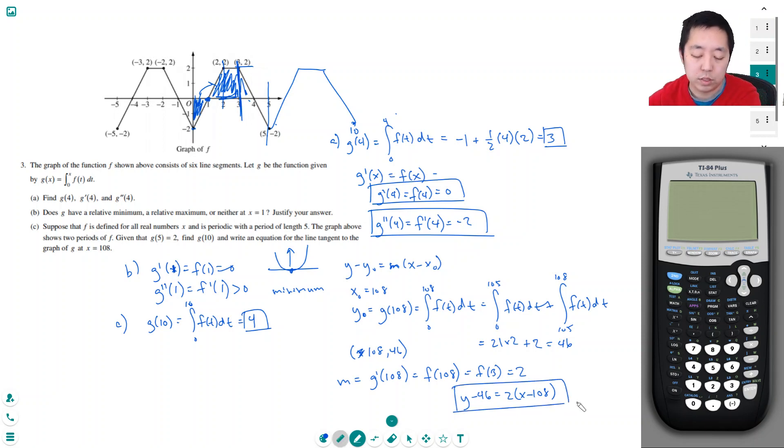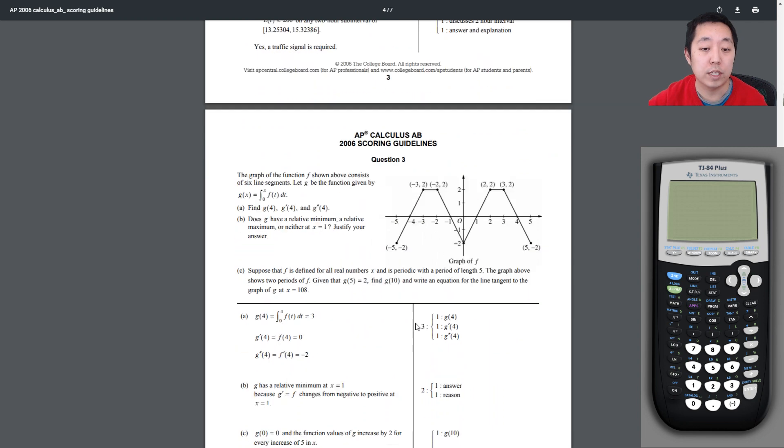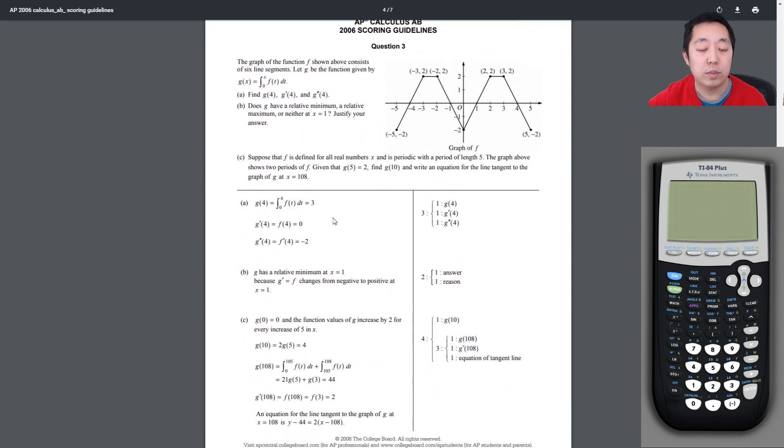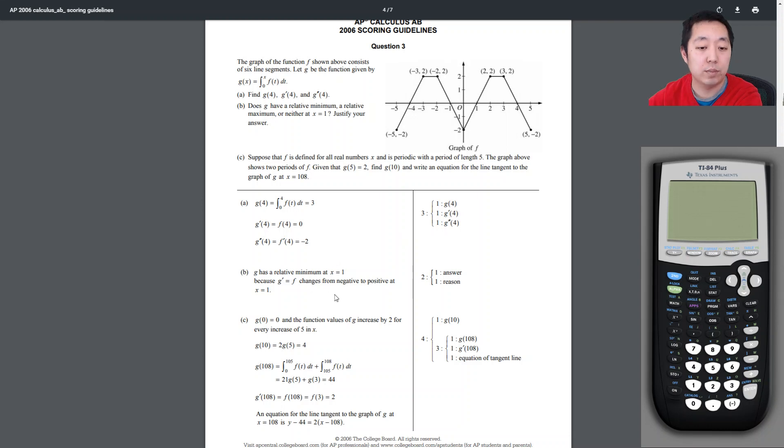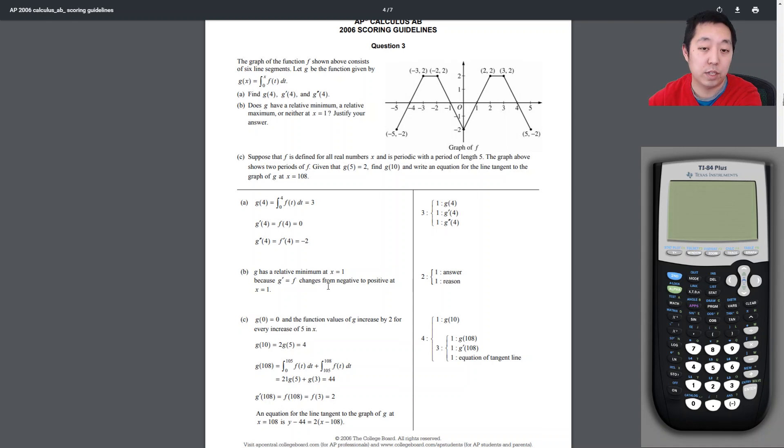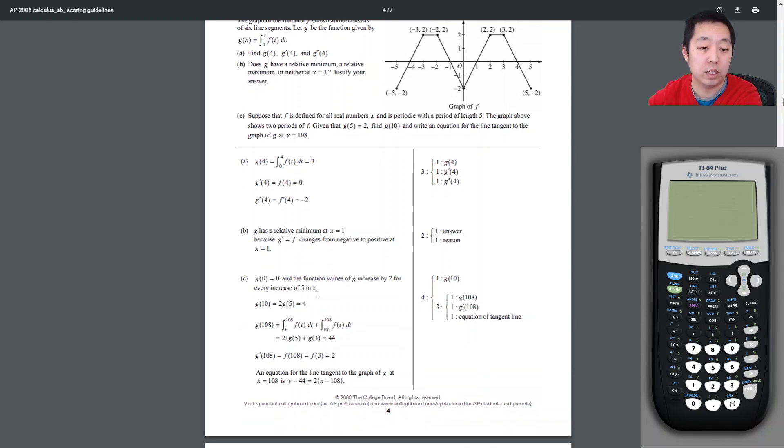Okay, so let's see how we did compared to the answers. 3, 0, negative 2. Is that what I got? 3, 0, negative 2, good. It's a relative minimum because it changes from negative to positive, or you could have used second derivative test. The answers are not as complete it seems like for these exams.